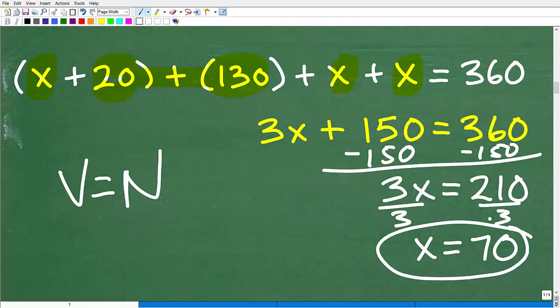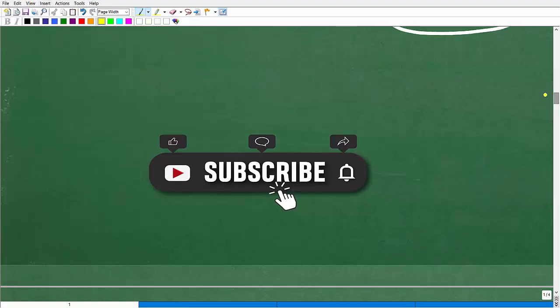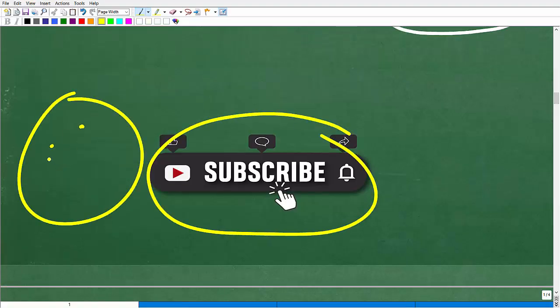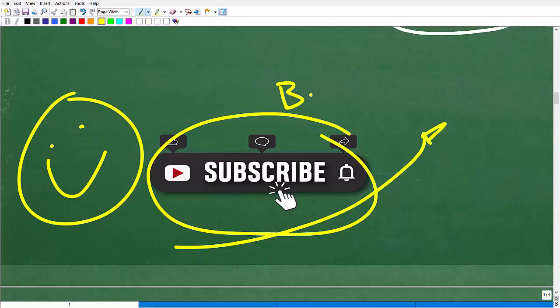So x is equal to 70. Pretty straightforward. So now we can take the next step, which of course is having you quickly subscribe to my YouTube channel. Don't you like how I just kind of sneak that in? Well, I definitely need your help to continue to grow my channel. Now I'm pretty happy with the growth of my channel over the last few years.